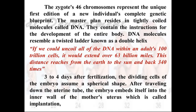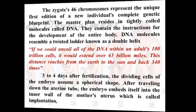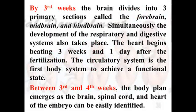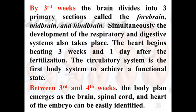Three to four days after fertilization, the dividing cells of the embryo assume a spherical shape. After traveling down the uterine tube, the embryo embeds itself into the inner wall of the mother's uterus — which is called implantation. Here, life begins. By the third week, the brain divides into three primary sections: the forebrain, midbrain, and hindbrain. Simultaneously, development of the respiratory and digestive system also takes place.